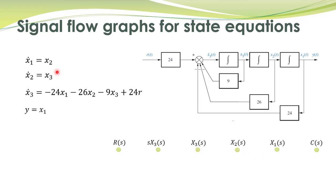From these state equations, we see that x1 dot is equal to x2. So if this signal is x1 and we connect these two signals with a branch with gain 1 over s, then this signal will be x1 dot. Since x1 dot equals x2, we have implemented the first state equation with this part of the graph.